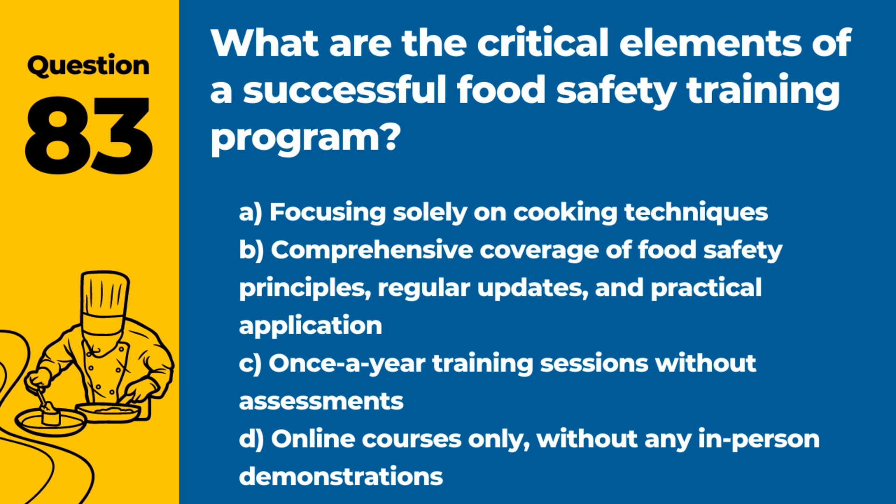Question 83. What are the critical elements of a successful food safety training program? Answer: B. Comprehensive coverage of food safety principles, regular updates, and practical application. Effective training programs ensure staff are knowledgeable and can apply food safety practices correctly.